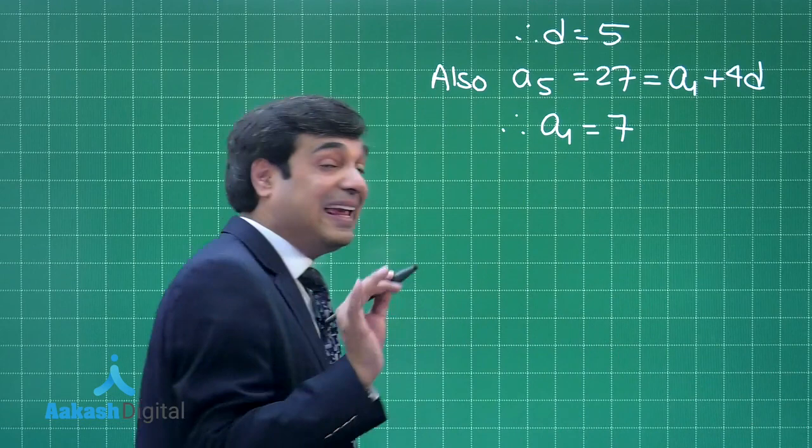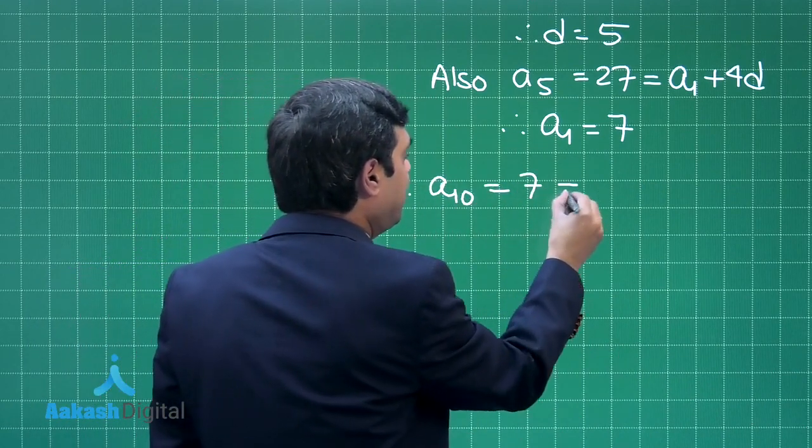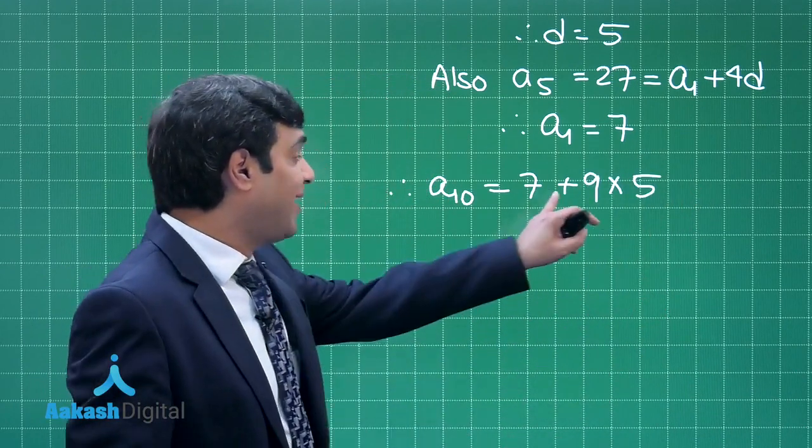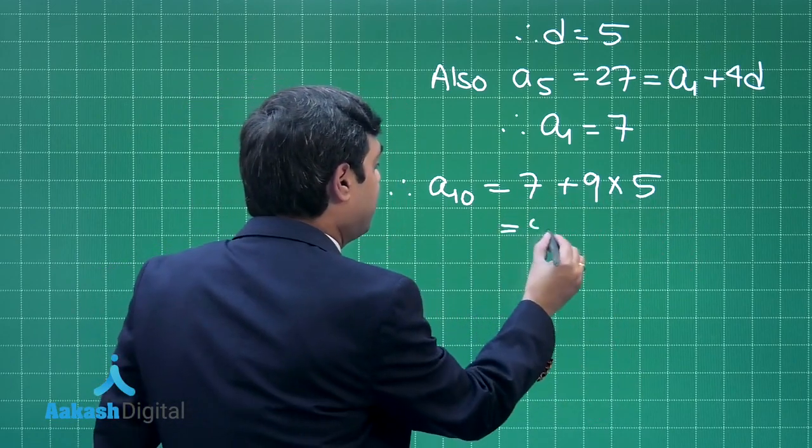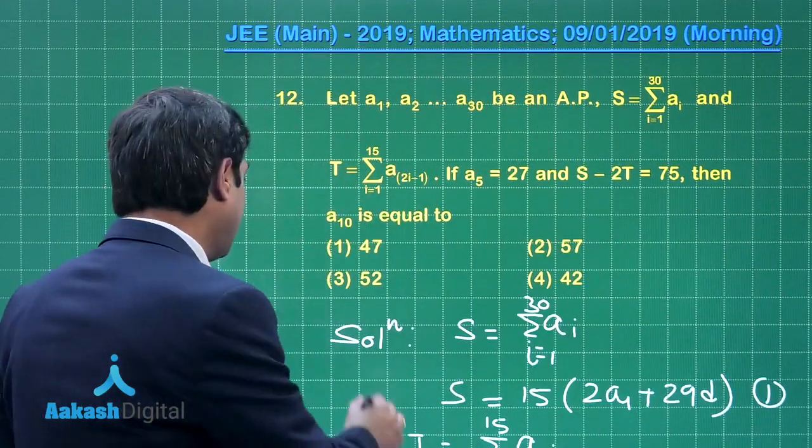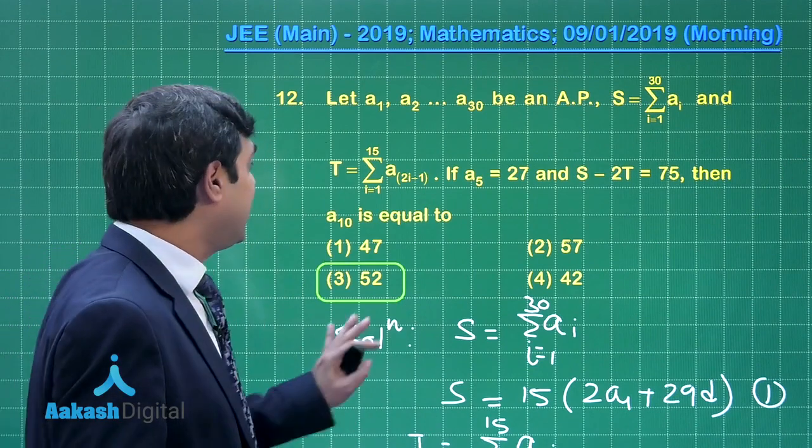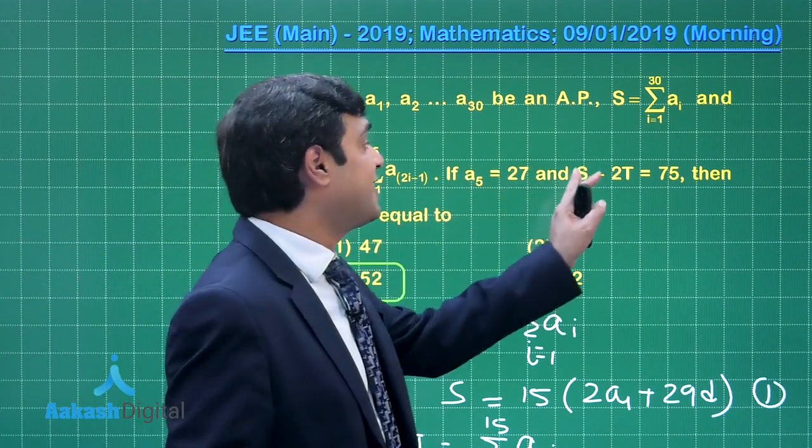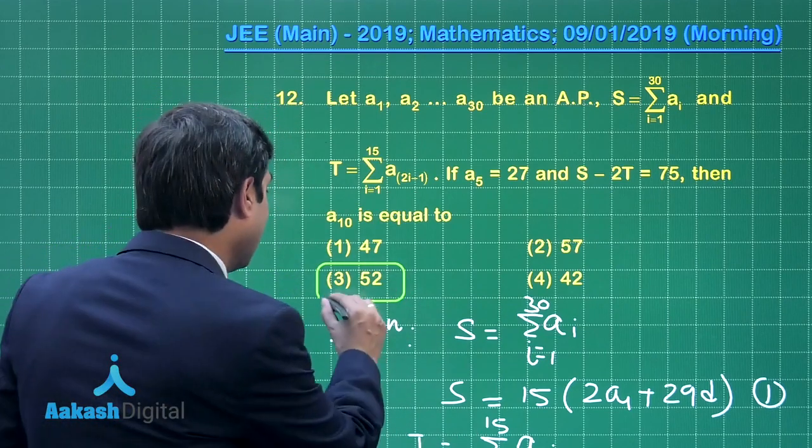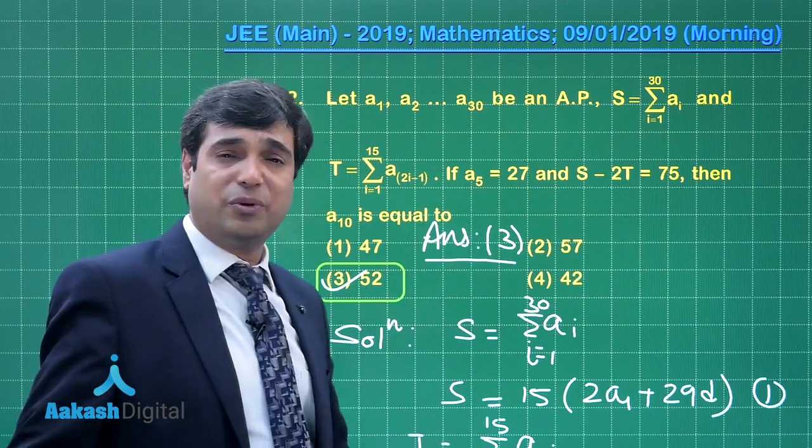Now we are looking for a₁₀. Therefore, a₁₀ is equal to 7 + 9 into 5. This is clear. So from here we get 9×5 is 45 + 7, that is 52. Let us look at the given options - 52, yes it is given here in option number 3. This is clear how we solve it. Simply it was mentioned like a₅ is there, S - 2T is there. So just apply because we have 2 unknowns a₁ and d, and that gives us finally the result as option number 3. Let us move on to the next question.